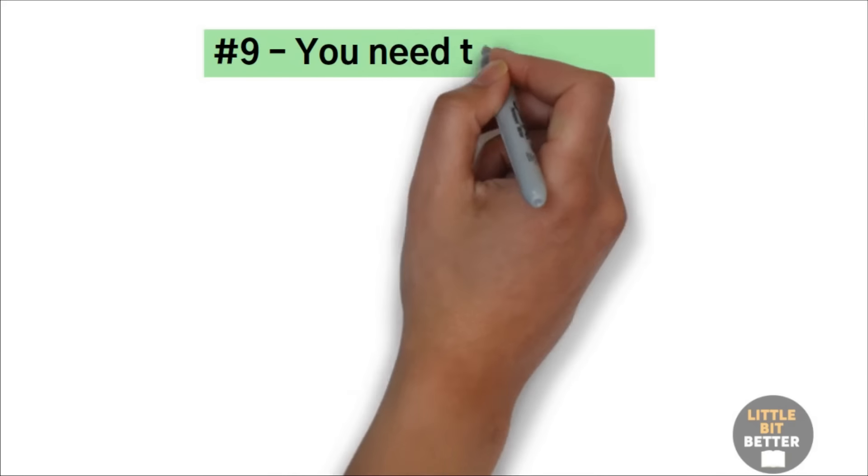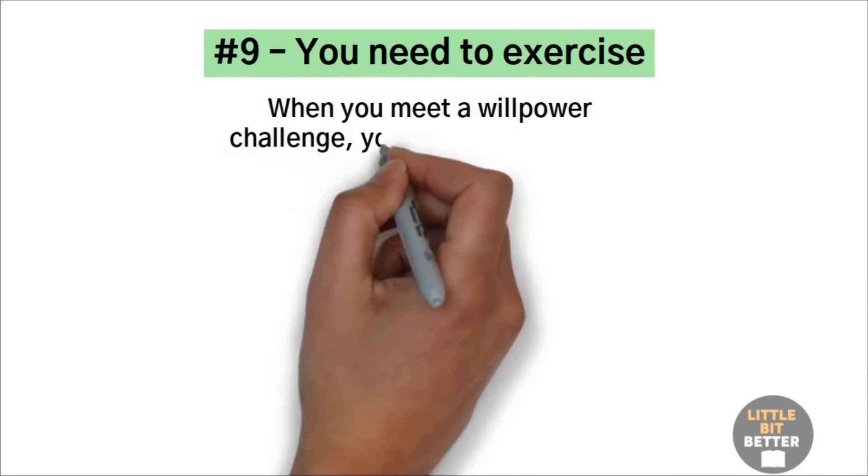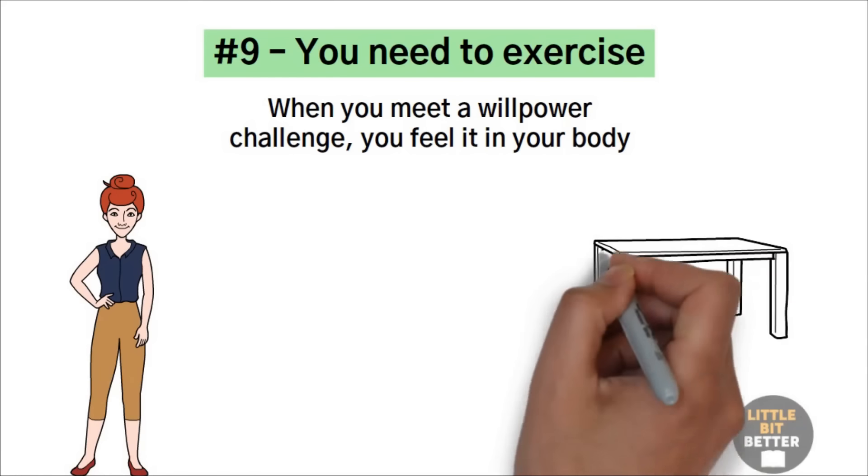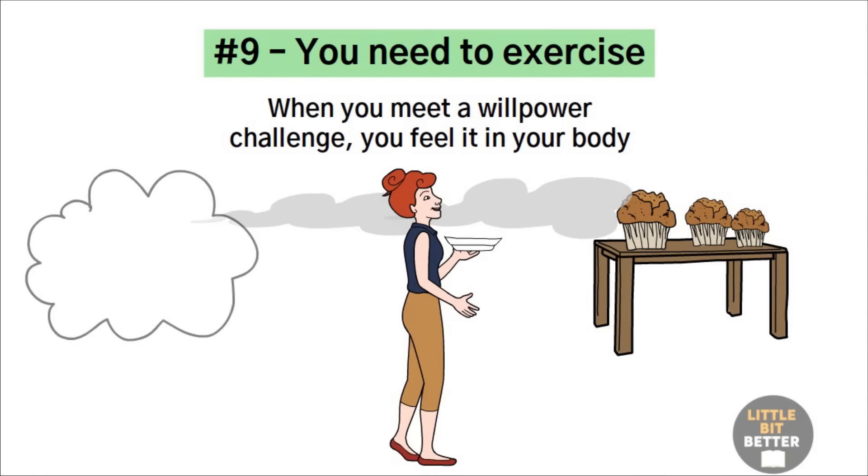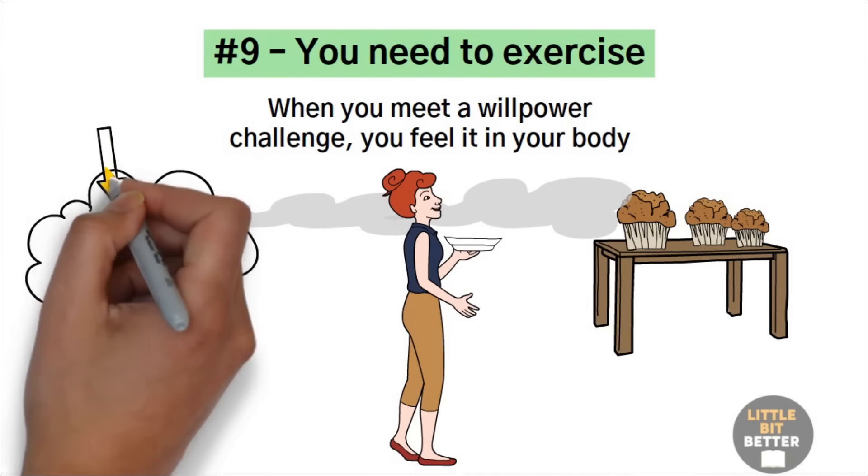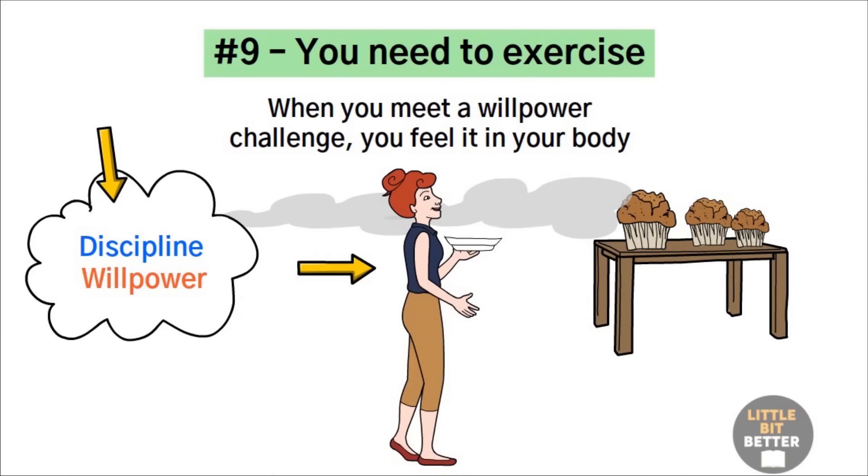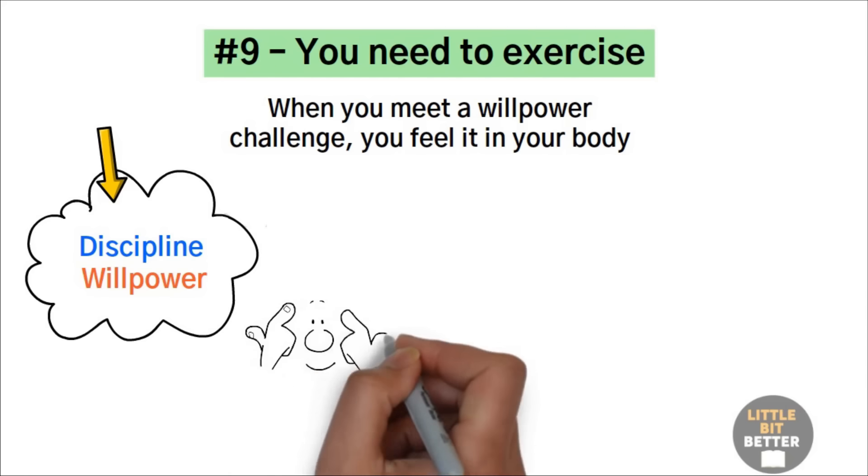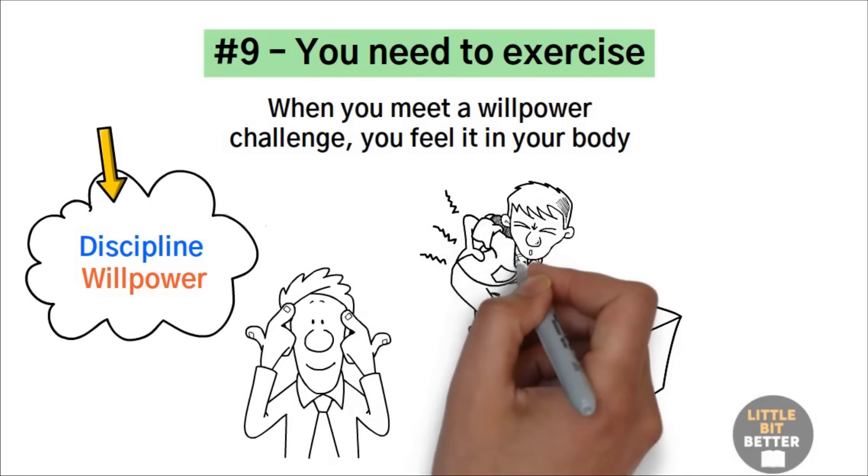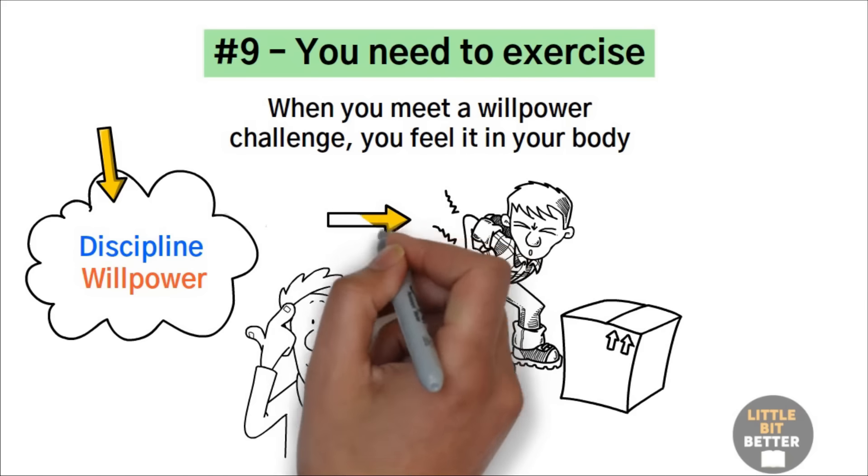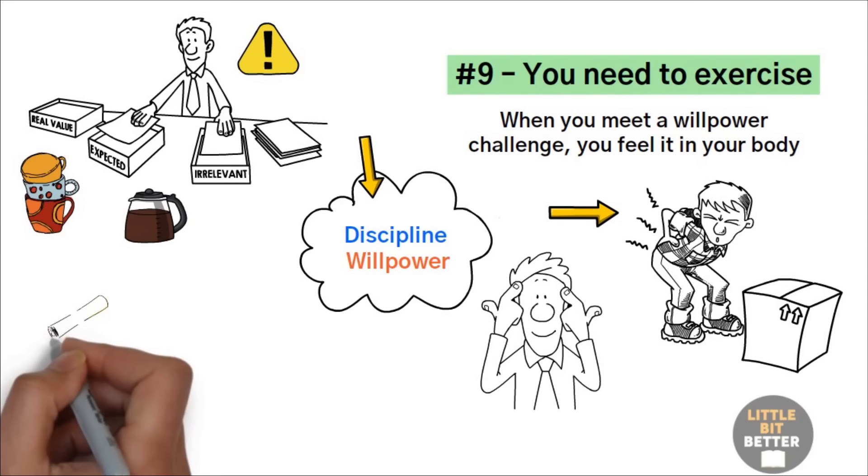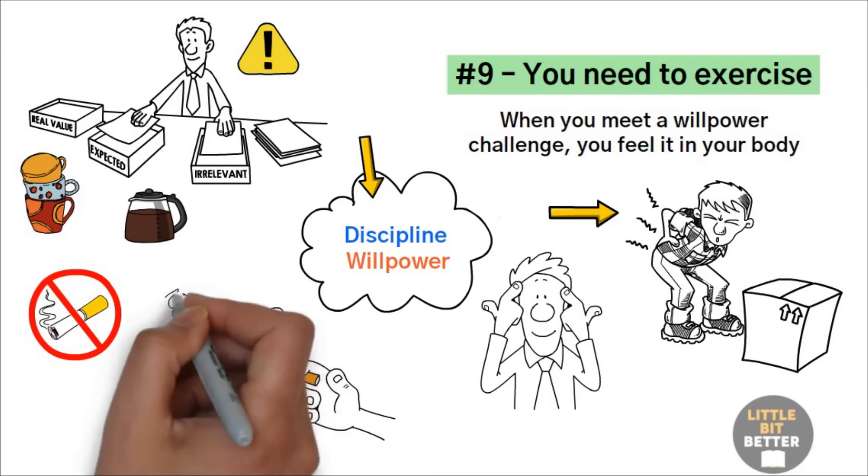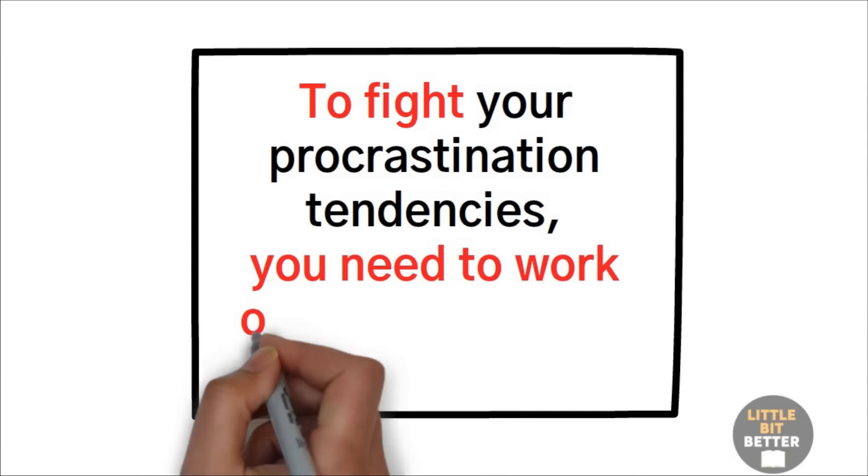Number nine, you need to exercise. When you meet a willpower challenge, you feel it in your body. Just think about what happens in your body when you smell your favorite food. Your body reacts so strongly that you become like the old cartoon character who floats toward the food following the smell. Most people understand that discipline and willpower are mind efforts, but science has proven that your body is as important as your mind when it comes to developing strong self-control. Sometimes your mind is focused, and you know what you must do, but your body is the one betraying you. You know you should clean the house, but you feel so lazy right now, and there's this backache. You know you've been drinking more coffee than it's healthy, but you're so sleepy. You need to feel more alert. You know you shouldn't smoke, but when you see your friend leaving on a cigarette break, your legs almost move by themselves to follow him.